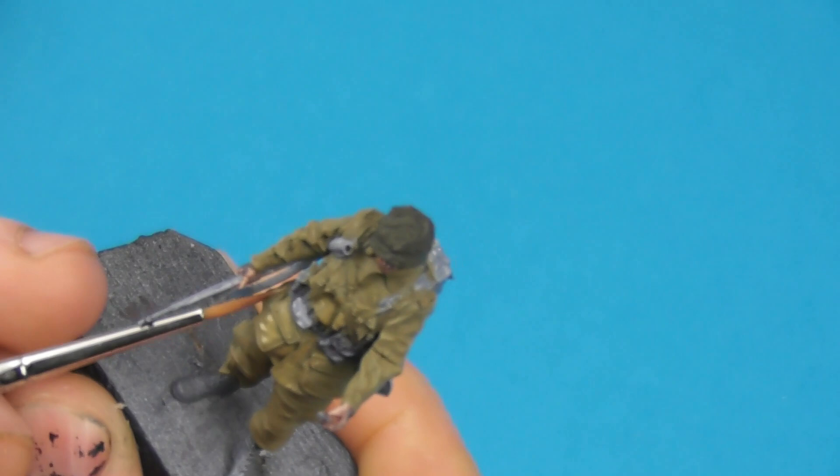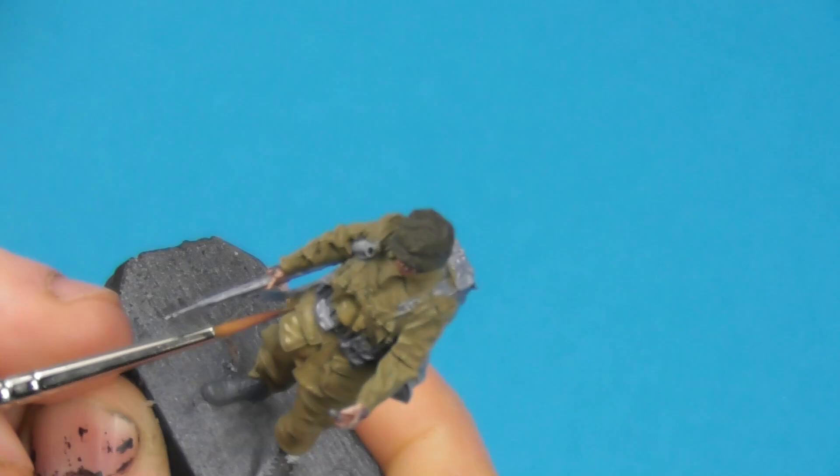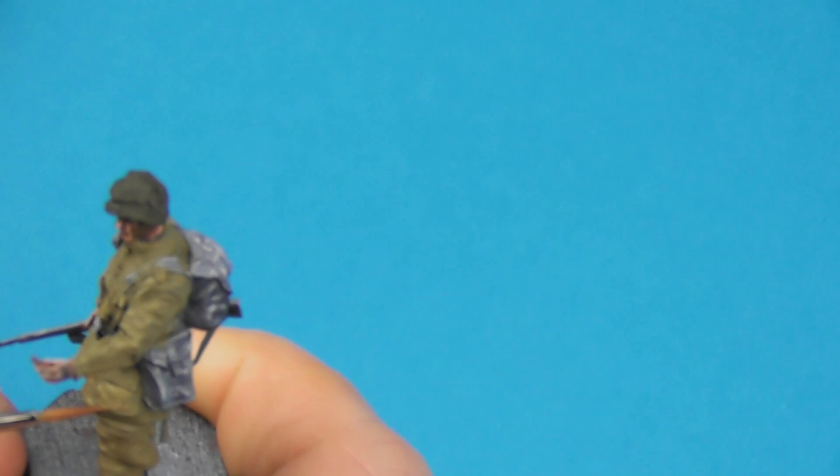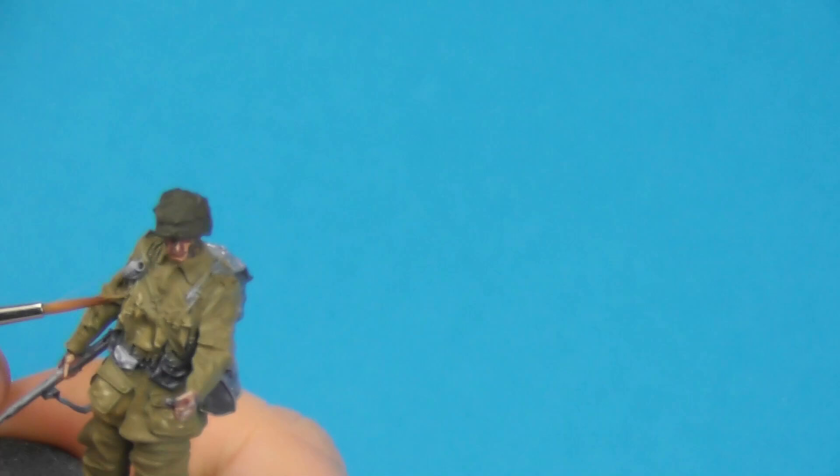I've switched down to a number zero brush here that's got a nice point on it. I'm just going to slowly work my way through this. It is a bit laborious so the best thing to do is maybe have a podcast or something going on just so you have a bit of company as you're painting. As you can see here I'm really just sketching in basic outlines. I'm not being too precious about it. I'm just trying to pick out where I think some of the highlights will go.